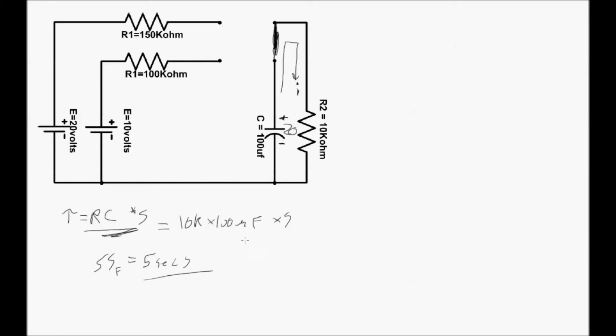Interesting to think about what the current would be in reaching the steady state. What would it be the instant that this circuit is closed? You can figure it out by just remembering Ohm's law. You know the voltage is 20 volts. That's what the capacitor was charged to. Don't know I, and the resistor is 10k. So solving for I,